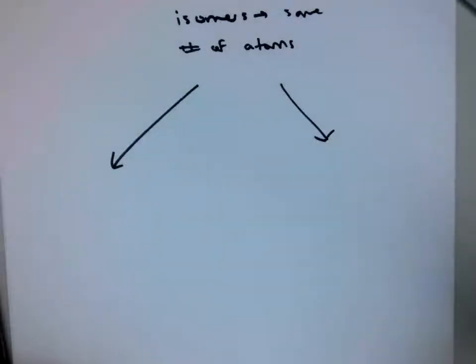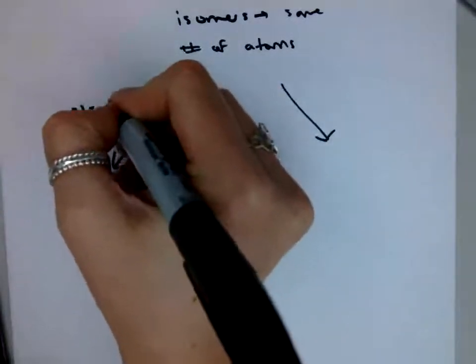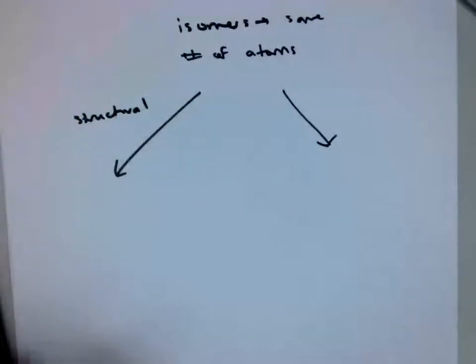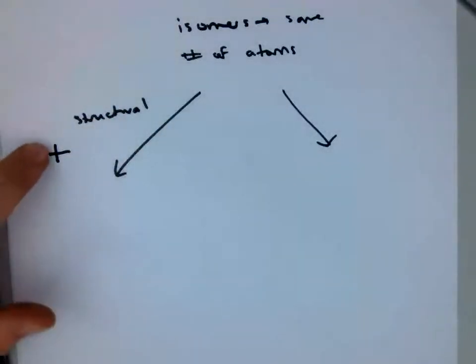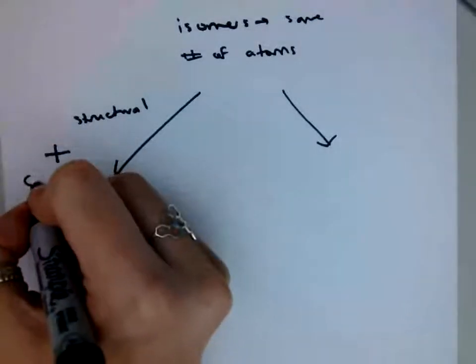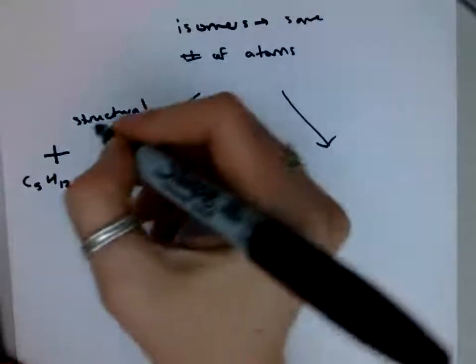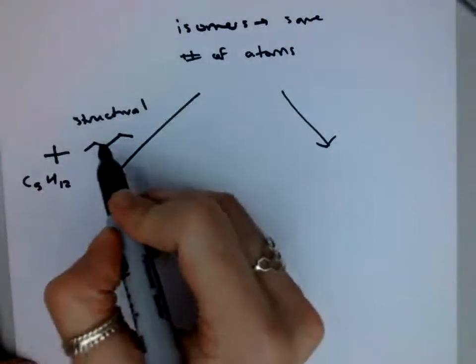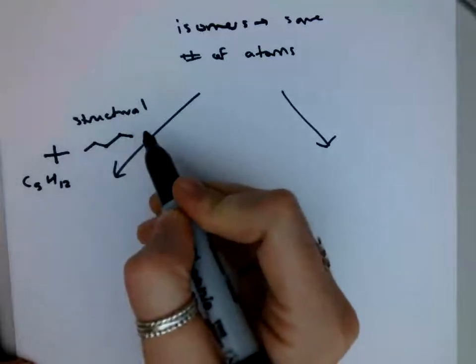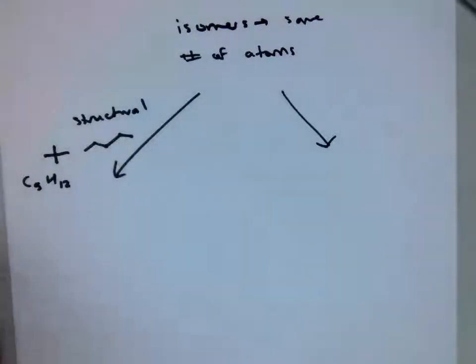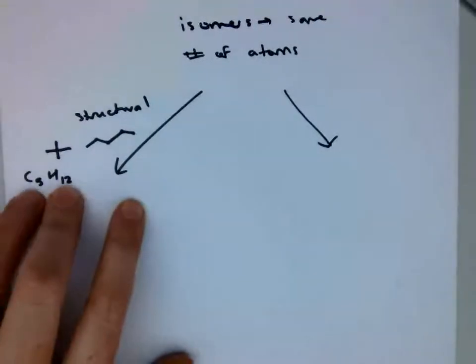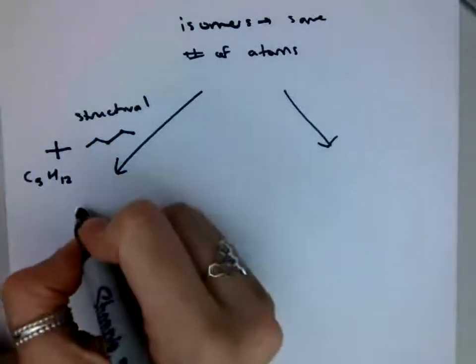There's structural isomers, and these literally mean they're built differently. So this has 5 carbons and 12 hydrogens. This also has 5 carbons and 12 hydrogens. They're just not constructed the same way. They have different structures, so these are constitutional.